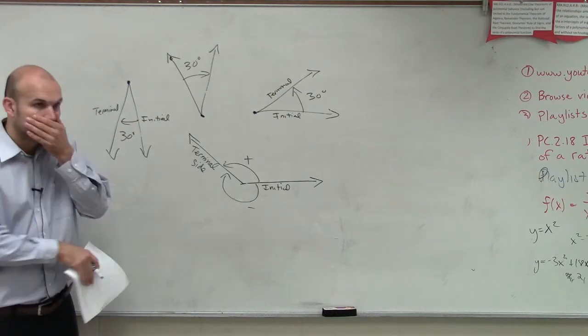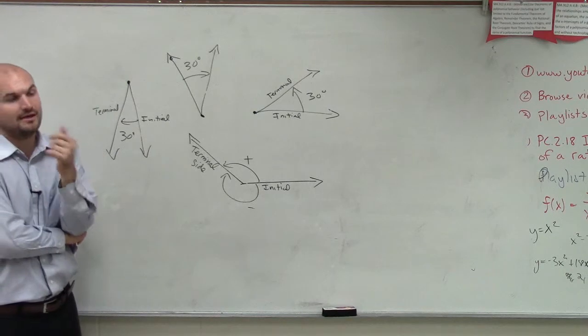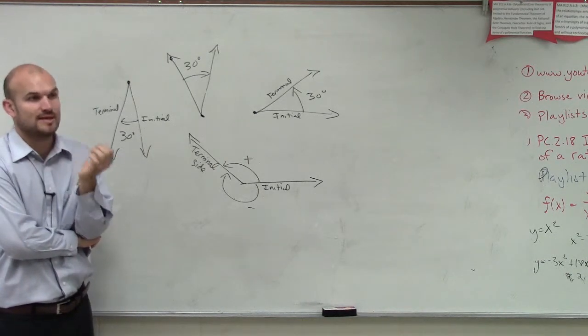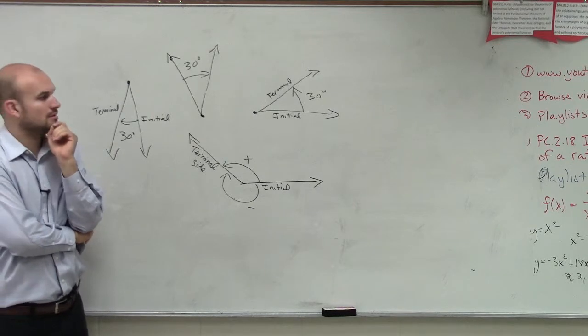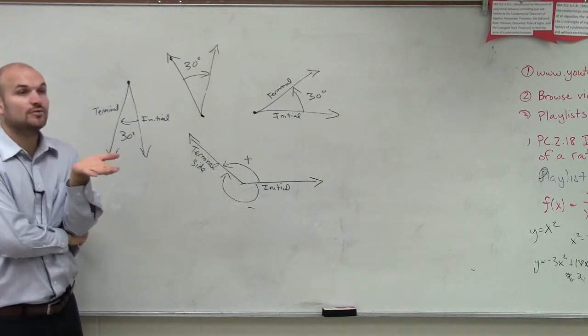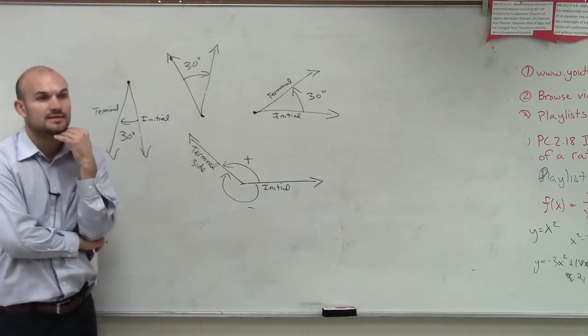Student: So like the initial side would always be on the x-axis? Teacher: Your initial side, especially when looking at x and y-axis, it would always be on your x-axis. Student: And y would always be 0? Teacher: Yeah, if you're going to look at a coordinate point on the initial side, yes, your y-coordinate would be 0.